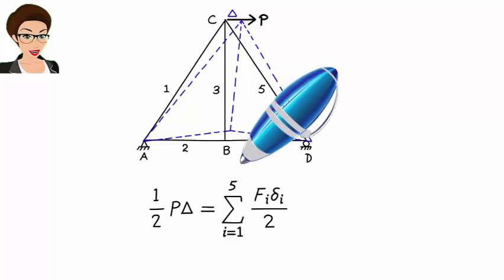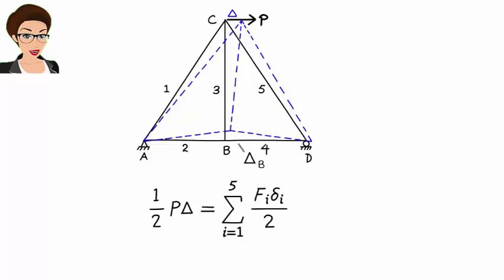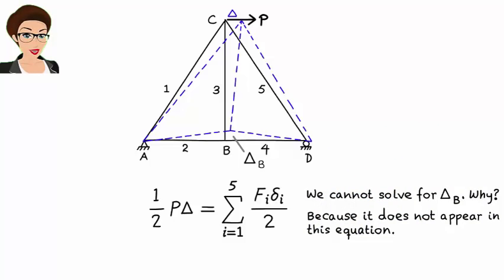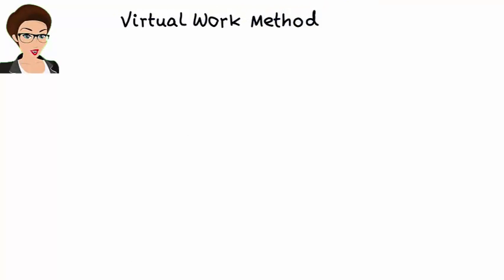But what if we needed to calculate the vertical displacement at b? Since delta-b does not appear in the work energy equation, we cannot solve for it using the work energy principle. We need to use a more general method, like the virtual work method. The method of virtual work is based on the work energy principle, but can be used to calculate displacement at any arbitrary point in the structure.